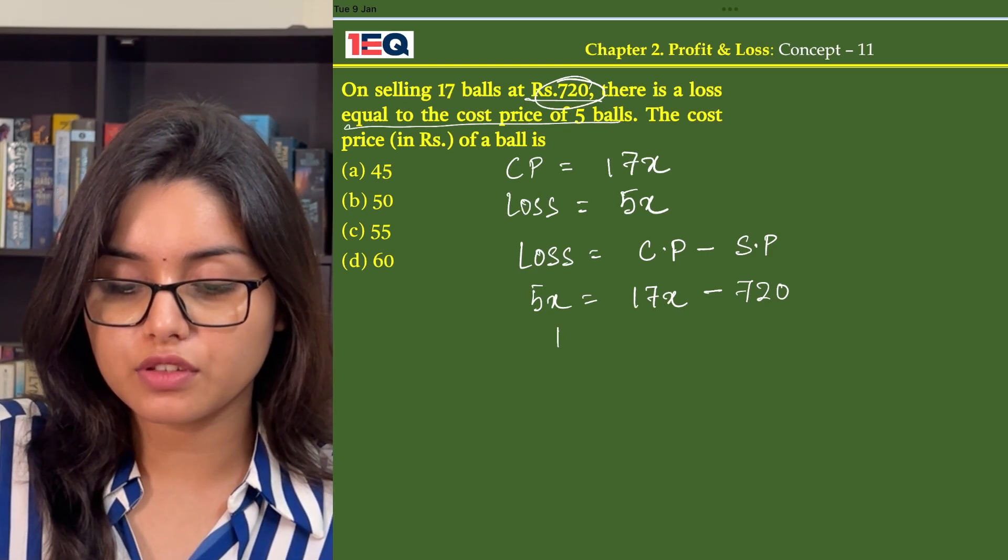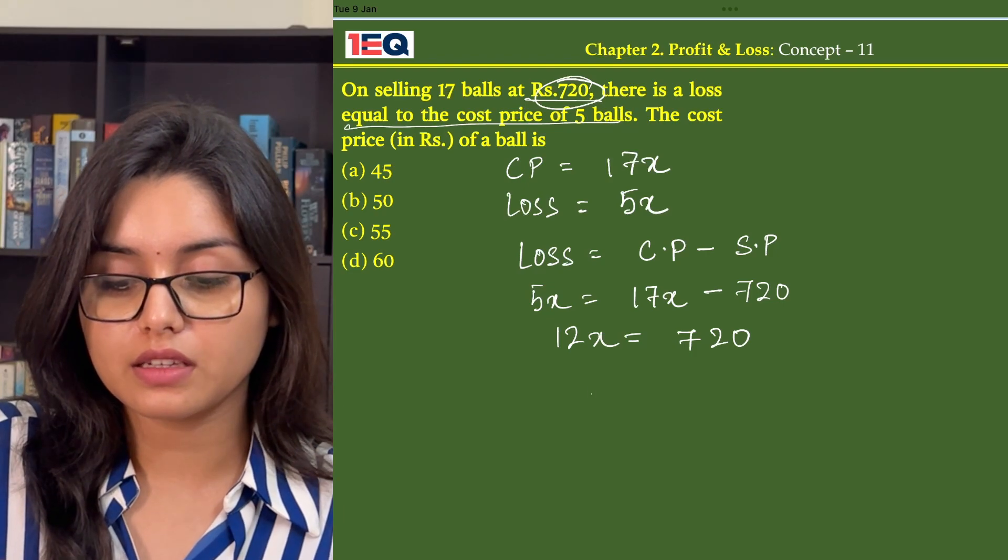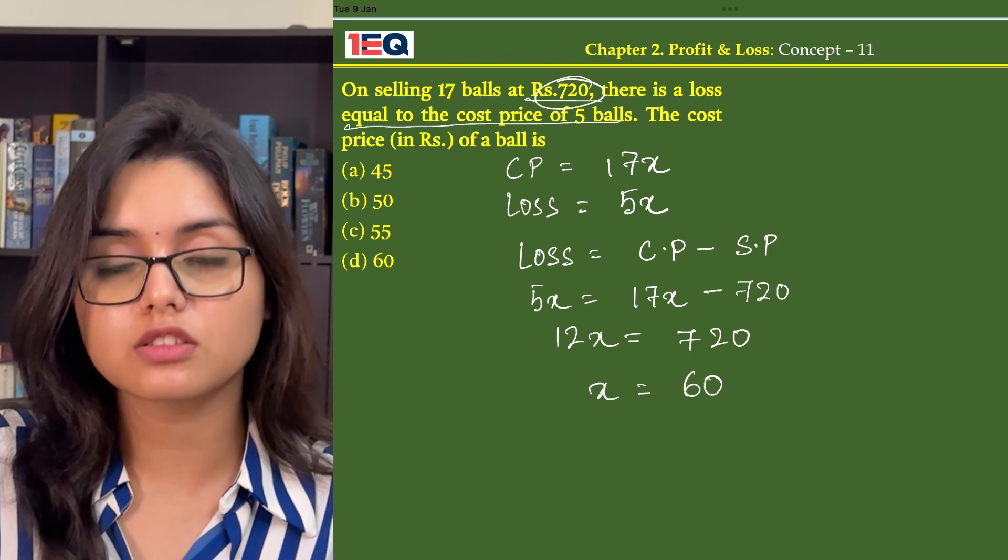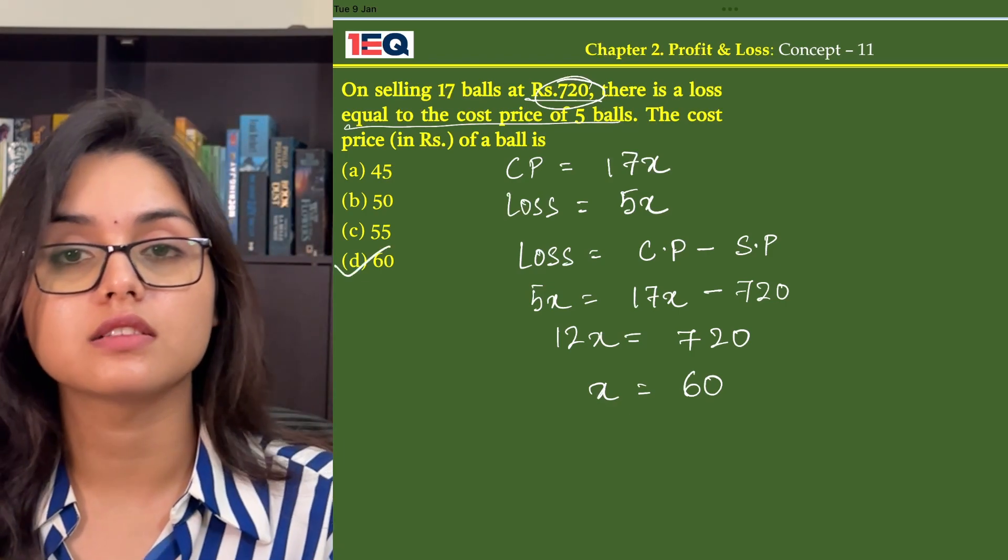On calculating further, we get 12x equals to Rs. 720 and x equals to Rs. 720 by 12, that is Rs. 60. So the option D is our answer.